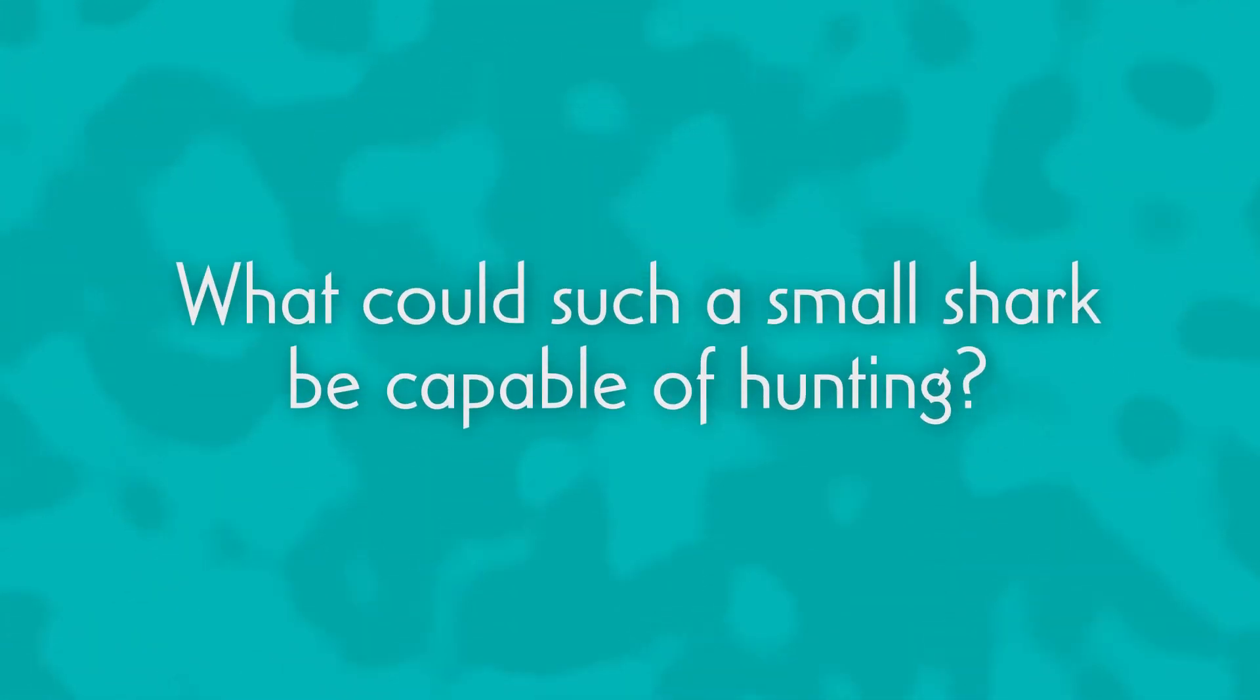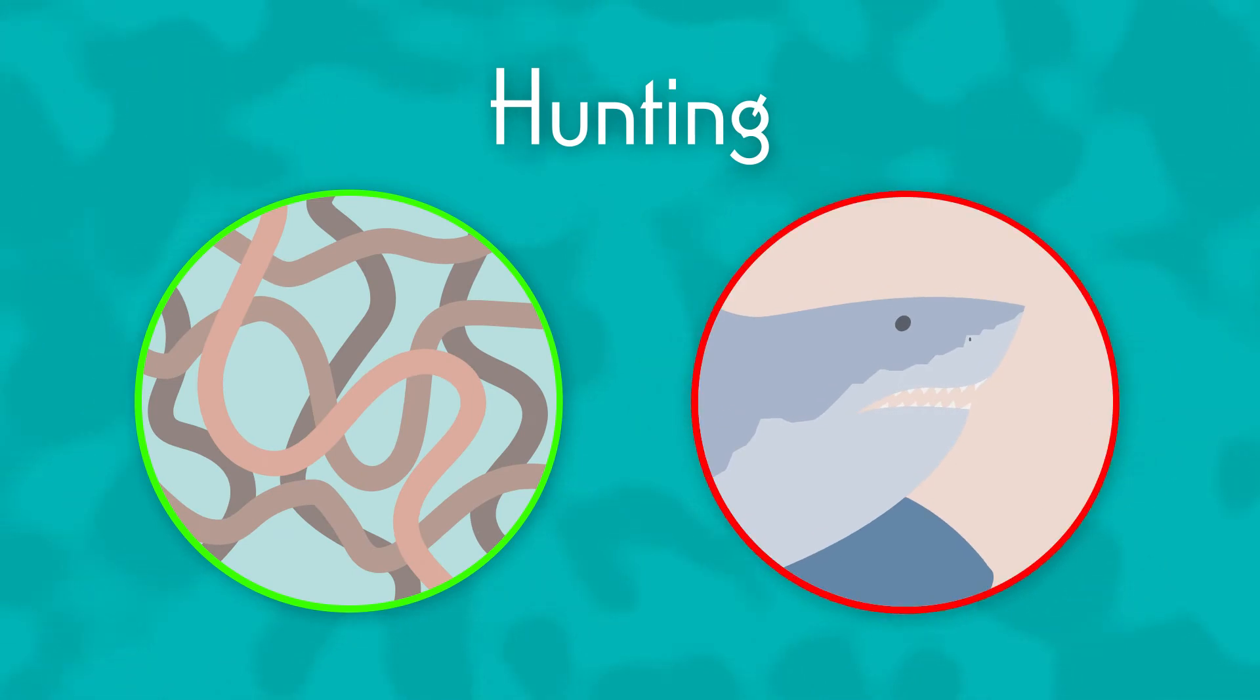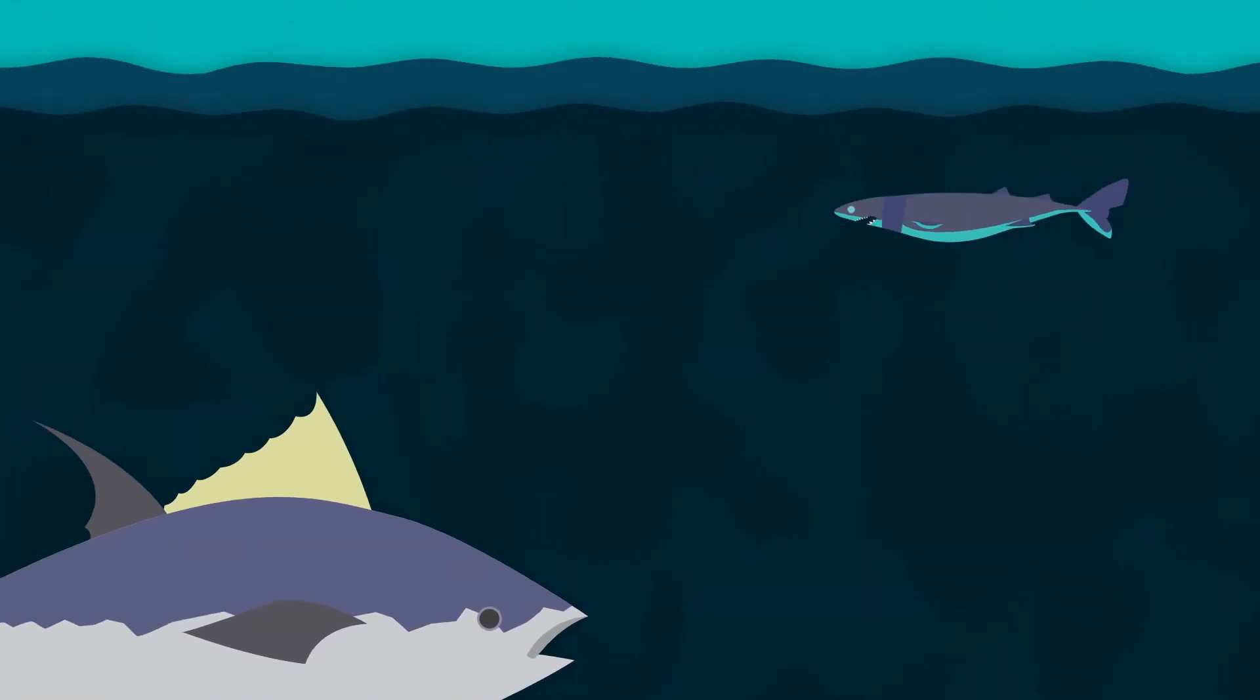But what could such a small shark be capable of hunting? The cookie-cutter shark hunts more like a parasite than an average predator. At night, these small sharks float above larger fish.